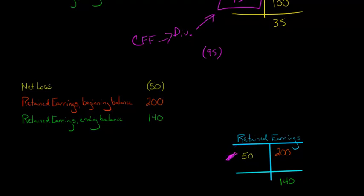So we've got $50 over here, that is because of the loss. So we start with $200, we subtract $50, that only gets us to $150, and yet we end up at $140. What does that mean? It means there must have been an extra debit here of $10. That's going to make this balance, right? Because $200 minus $50 minus $10 is going to be $140.